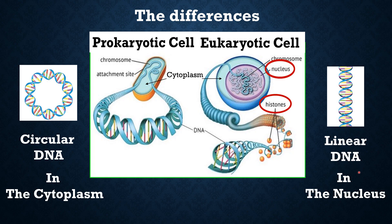As you can see in this figure, the DNA in eukaryotic cells is linear and found in the nucleus. To summarize: in prokaryotic cells, the DNA is circular and found in the cytoplasm, while in eukaryotic cells, the DNA is linear and found in the nucleus.